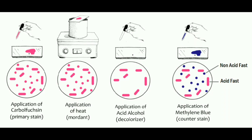Let us summarize the steps of acid-fast staining. First is application of carbol fuchsin, the primary stain. Second is application of heat. Third is application of acid alcohol, which is the decolorizing step. Fourth is application of methylene blue, the counterstain. After this procedure, we observe the slide under a microscope. The acid-fast bacteria are red in color, whereas non-acid-fast bacteria are blue in color, because in the decolorization step they lose the red color and take up the methylene blue color.